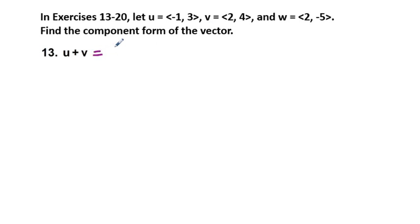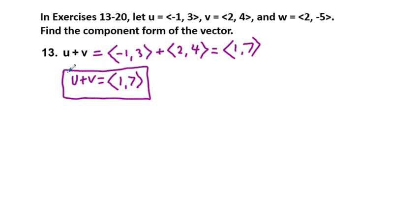For u plus v, we're going to put this in component form. u is <-1, 3> and v is vector <2, 4>. In component form, all we have to do is add these two together. So -1 plus 2 is going to be 1, and 3 plus 4 is 7. So u plus v equals vector <1, 7> in component form.